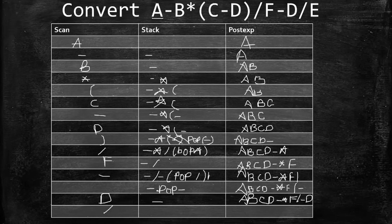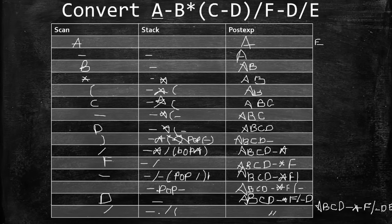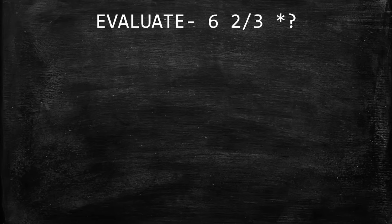Scan slash — push to stack. Scan E — operand, push to PostExp. PostExp: A B C D minus * F slash minus D E. Nothing left to scan, so pop remaining stack elements: pop slash, then pop minus. Final postfix answer: A B C D minus * F slash minus D E slash minus.